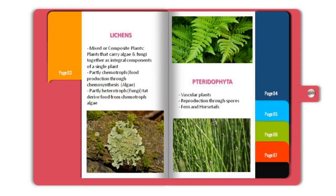Then we have lichens. Lichens are mixed or composite plants. They carry algae and fungi together as internal components of a single plant. They are partly chemotroph, that is they produce their food through chemosynthesis — for example, algae — and partly heterotroph, that is fungi, which derive food from the chemotrophic algae.